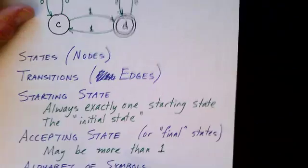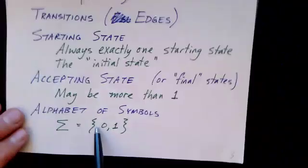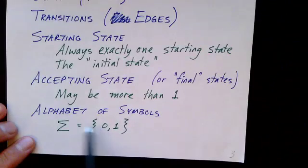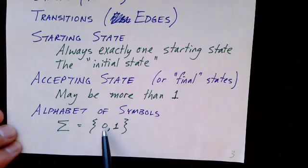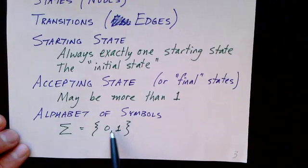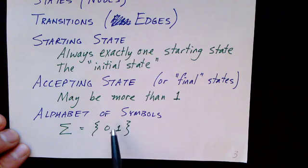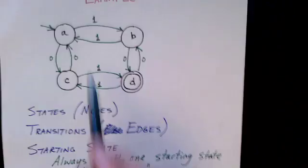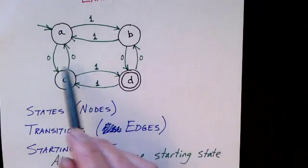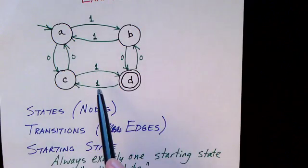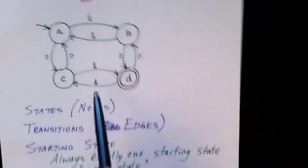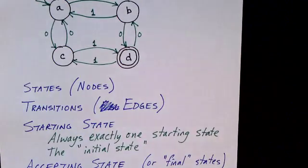A key aspect of finite state machines is that there is some alphabet of symbols. These are the symbols that label the edges. In this particular example, our alphabet — which we symbolize with capital sigma — just consists of two symbols, zero and one. Those are the symbols that we can put on any of the edges. In other examples, we'll have different alphabets.